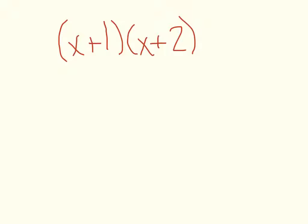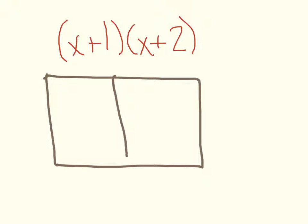So the first way I'm going to demonstrate is with the boxes. We're going to make a square, have our boxes here, and I'm going to bring down the first binomial, x here and plus 1 here, x here and plus 2 here.